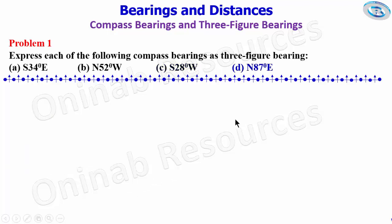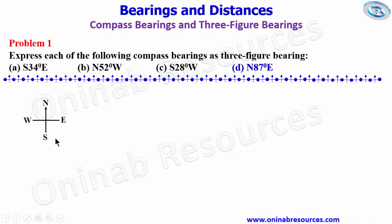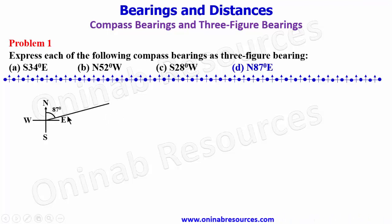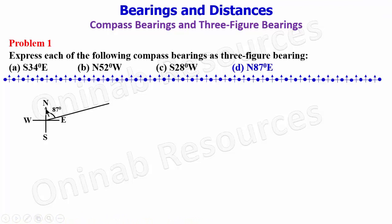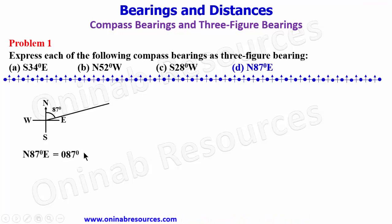We go to 1D. For 1D, we have north 87 degrees east. We get our point and move from the north 87 degrees to the eastern direction, then draw the line. This is very clear because the angle from the north to the line is already 87 degrees. So north 87 degrees east equals 087 degrees as the three-figure bearing.